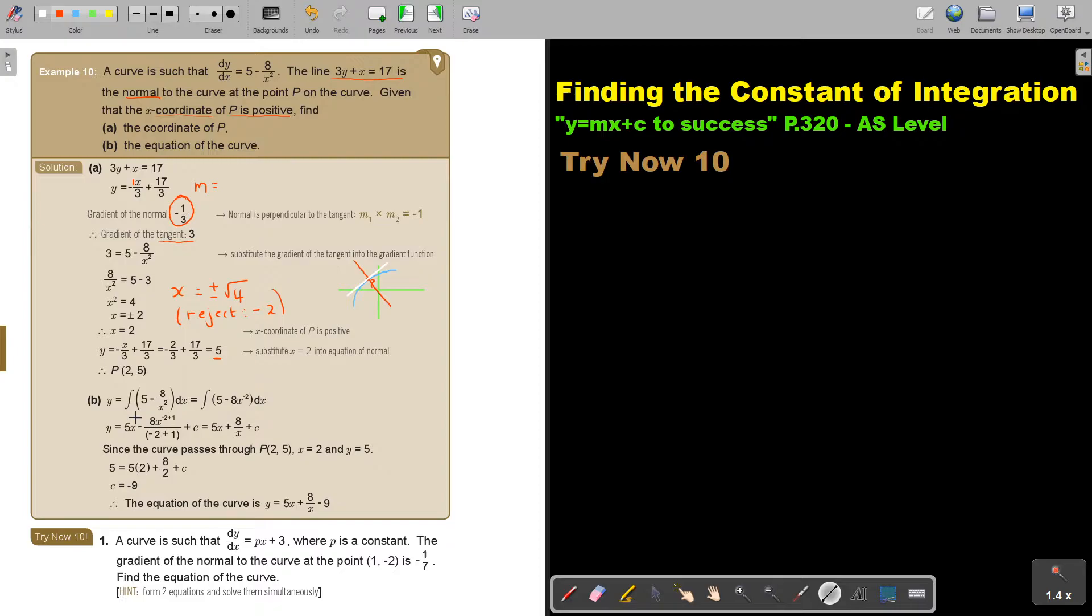And then the equation of the curve. Now I'm going to integrate this derivative function. That's what I did there, and then plus C. And then I just substitute that point. Because remember what I said, that point P is on the curve, on the tangent, and on the normal. It's all going through point P. So I substitute and I get the value of C is negative 9. So the equation of the curve is going to be this.